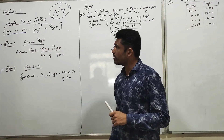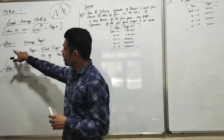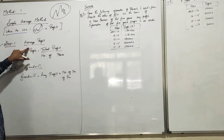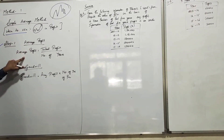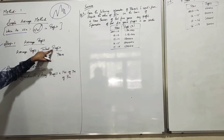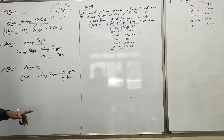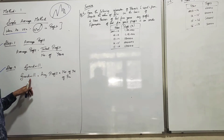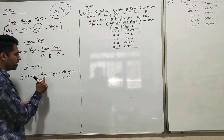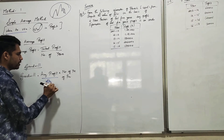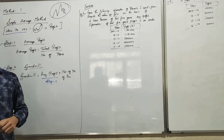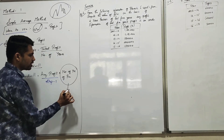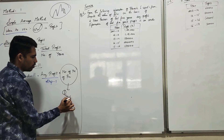Now coming to the steps for calculation of goodwill, there are two steps. Step one is Average Profit, and the formula is: Total Profit divided by Number of Years. Step two is Goodwill, and the formula is: Average Profit multiplied by Number of Years of Purchase. The number of years of purchase will be given in the question.